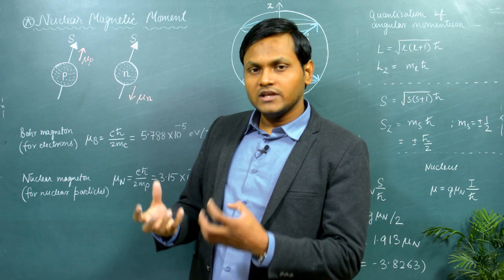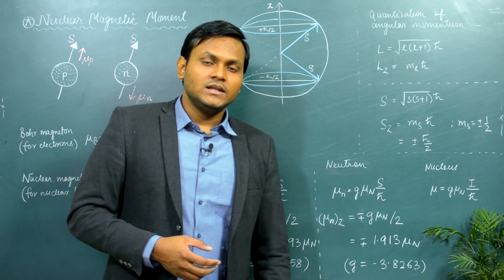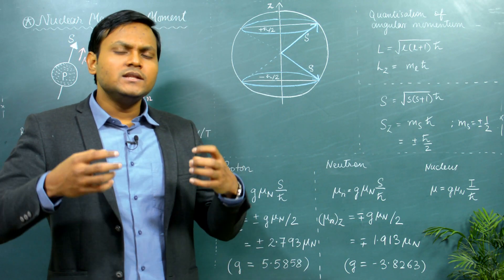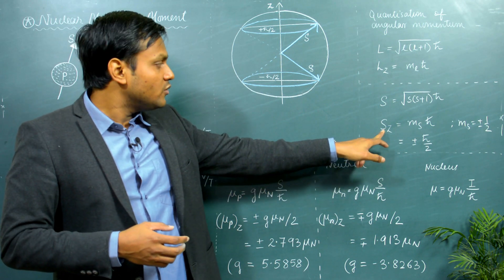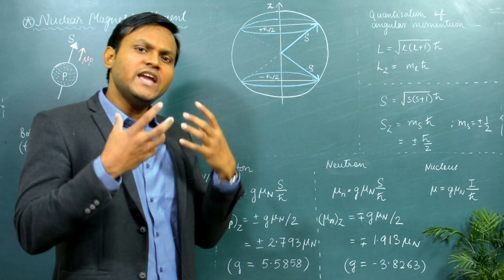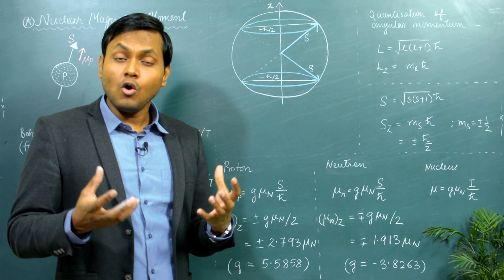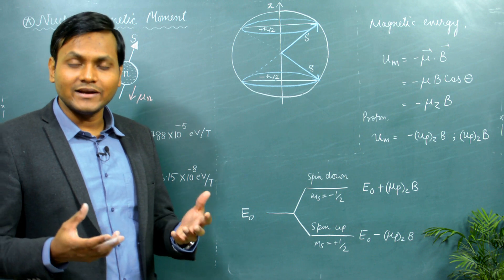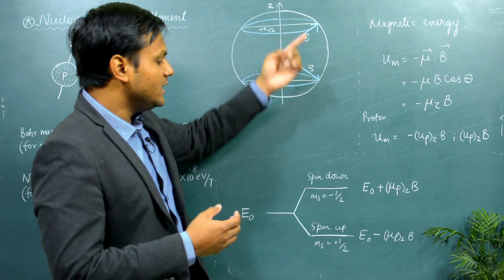Putting in these values, the magnetic moment of a proton in the direction of an external magnetic field comes out to be ±2.793 nuclear magnetons, and the magnetic moment of a neutron comes out to be ∓1.913 nuclear magnetons. It is plus/minus for the proton because the magnetic moment and the spin angular momentum are in the same direction, while it is minus/plus for the neutron because they are in opposite directions. Now, since neutrons, protons, and electrons are tiny bar magnets put in an external magnetic field, they cannot orient themselves in any arbitrary direction — their directions are quantized by the s_z quantization rule.